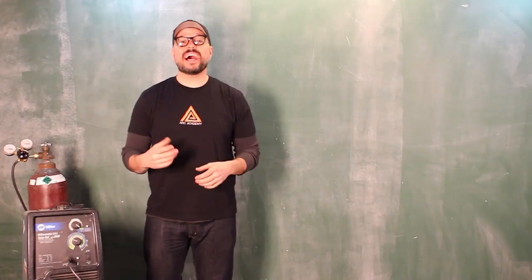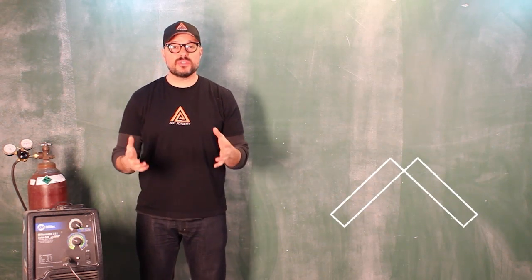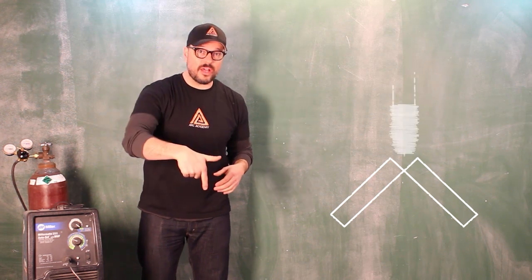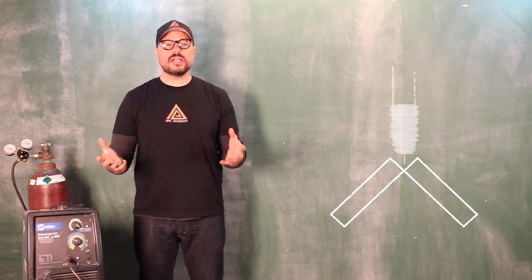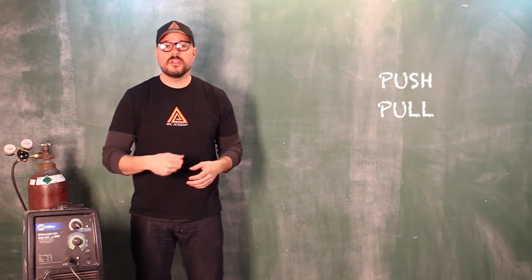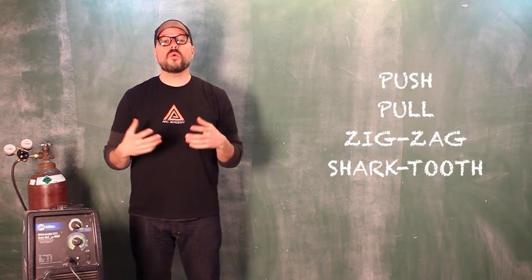When welding on an outer open corner joint in flat position, flat position meaning that your gun nozzle work angle is pointing straight down to the weld, you can utilize any of the techniques that you've already learned. You can do the straight push or pull, zigzag, sharp tooth, or half moon.